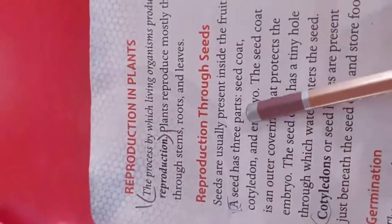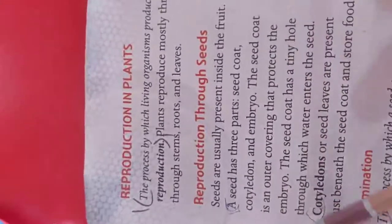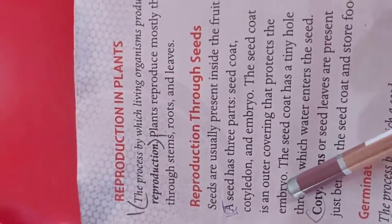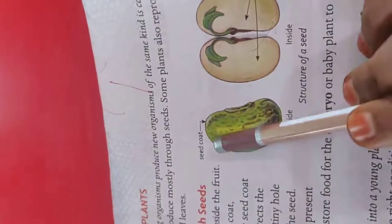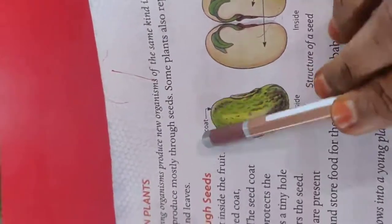Seeds have three parts: seed coat, cotyledon and embryo. The seed coat is an outer covering that protects the embryo. It is used to protect the embryo.